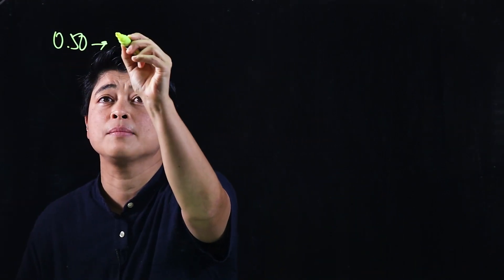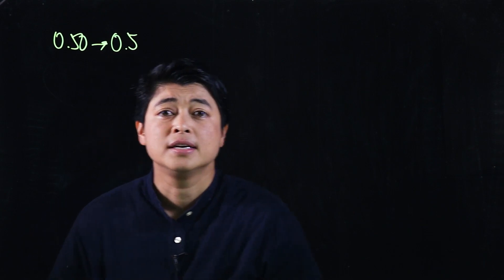If a decimal ends with a zero, that means we can technically drop the last zero after the decimal. So those don't count. So for example, if you have 0.50, that's just the same as 0.5.